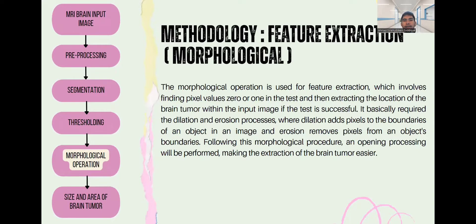The next methodology is feature extraction, which involves morphological operations. The morphological operation is used for feature extraction, finding pixel values of 0 or 1, and then extracting the location of the brain tumor within the input image. It requires the dilation and erosion process, where dilation adds pixels to the boundaries of an object in an image and erosion removes pixels from an object's boundaries. Following this morphological procedure, an opening process will be performed, making the extraction of the brain tumor easier.